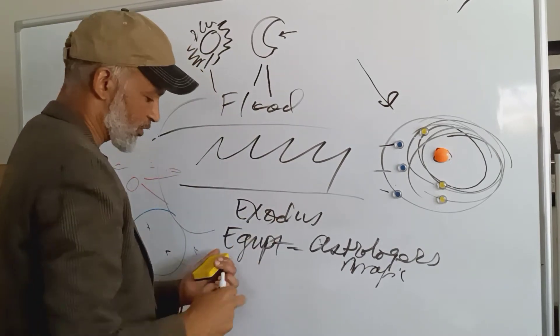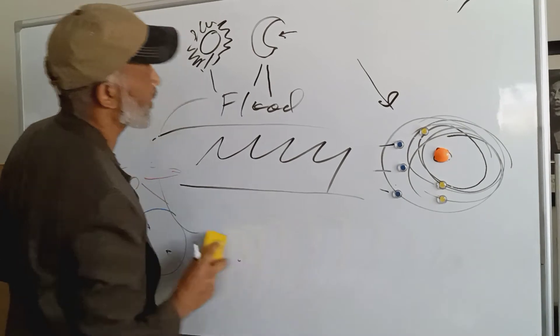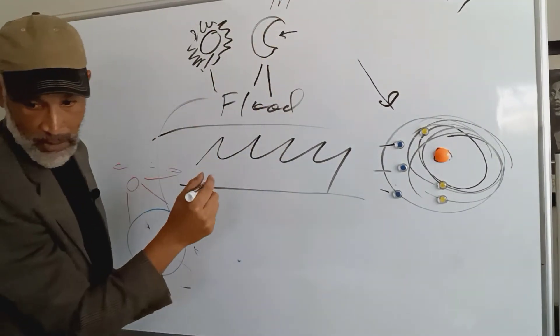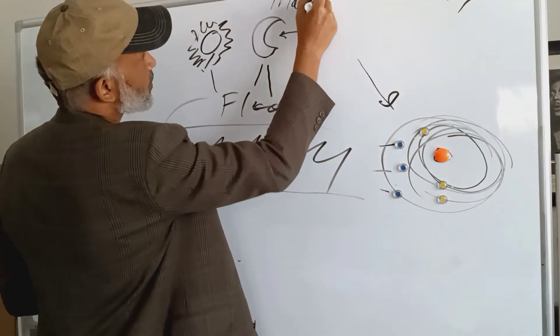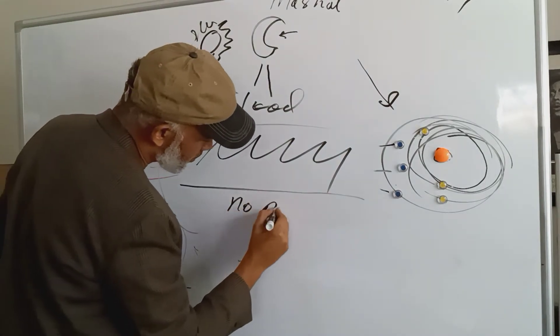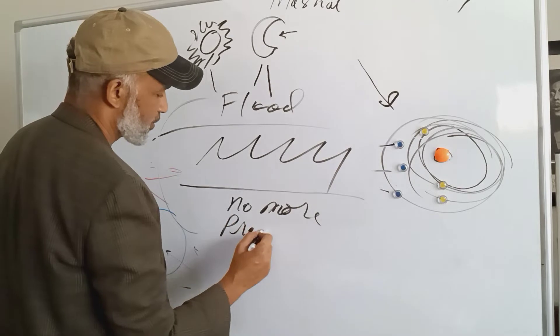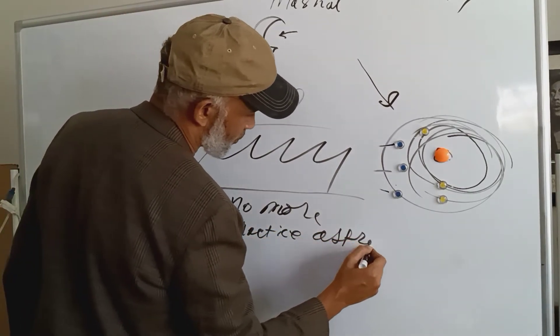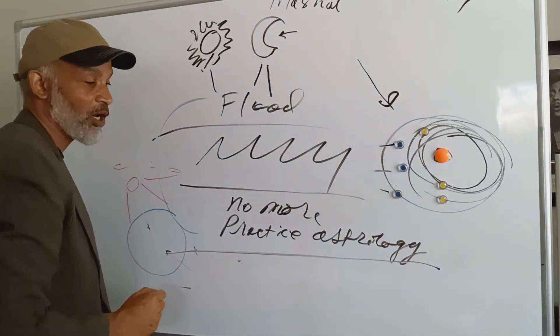And so when they were released from Egypt, the first thing that the Creator gave everyone was the Mashal, the M-A-S-H-A-L. Say no more. Never again practice astrology. Yet there were smart ones who did.